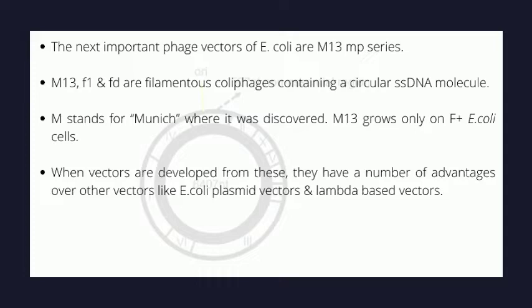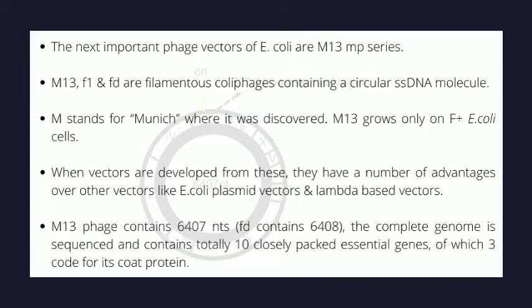When vectors are developed from M13, they have a number of advantages over other vectors like E. coli plasmid vectors or lambda-based vectors. M13 phage contains about 6,000 nucleotides. The complete genome is sequenced and contains totally 10 closely packed essential genes, out of which three code for its coat protein.